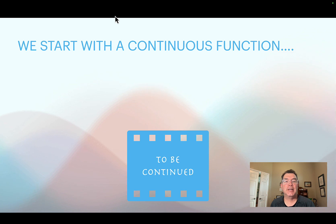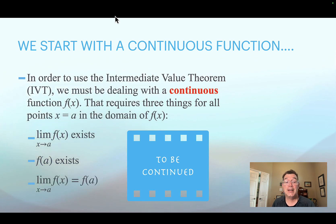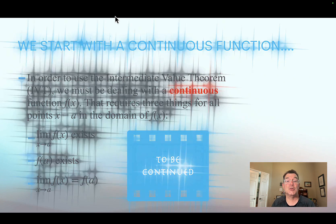We need to start by beginning with a continuous function. We can't use the intermediate value theorem if the function that we're dealing with is not continuous. So first we need to show that it's continuous. If a function is continuous, then three things have to be true for all points at x equals a. First, the limit as x approaches a of f(x) has to exist. Second, f(a) has to exist. And third, that limit and that function value have to be equal to each other. If those three things are true, then the function is continuous and we can use the intermediate value theorem.